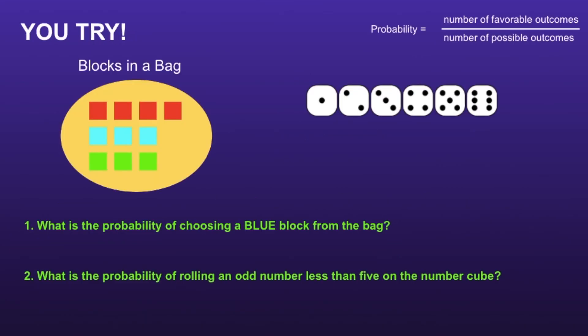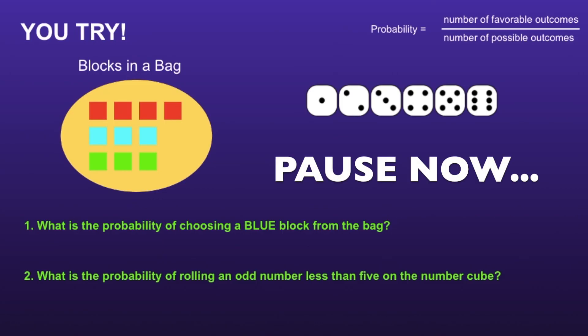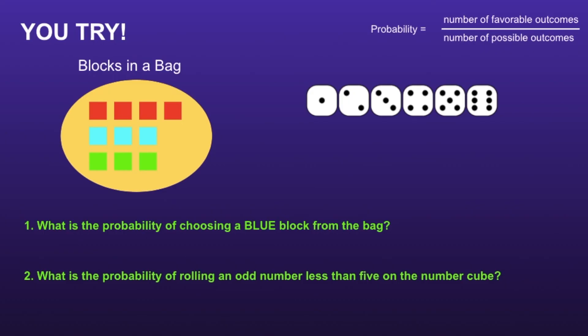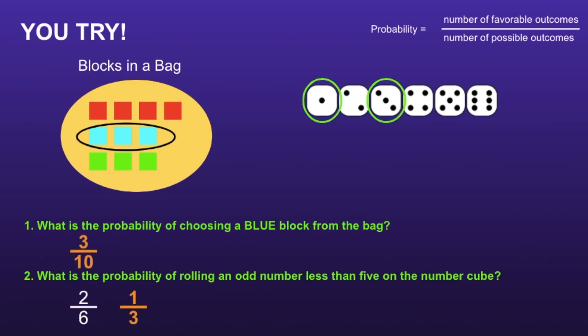Okay, it is your turn to try it out now. There are two problems on the screen I want you to solve. I would recommend you pause the video now, solve, and then resume when you're ready to see if your solutions are correct. The probability of choosing a blue block from the bag is 3 tenths, and the probability of rolling an odd number less than 5 on the number cube is 1 third. If you had either of these incorrect, I would recommend you pause, go back, and see if you can find your mistake.